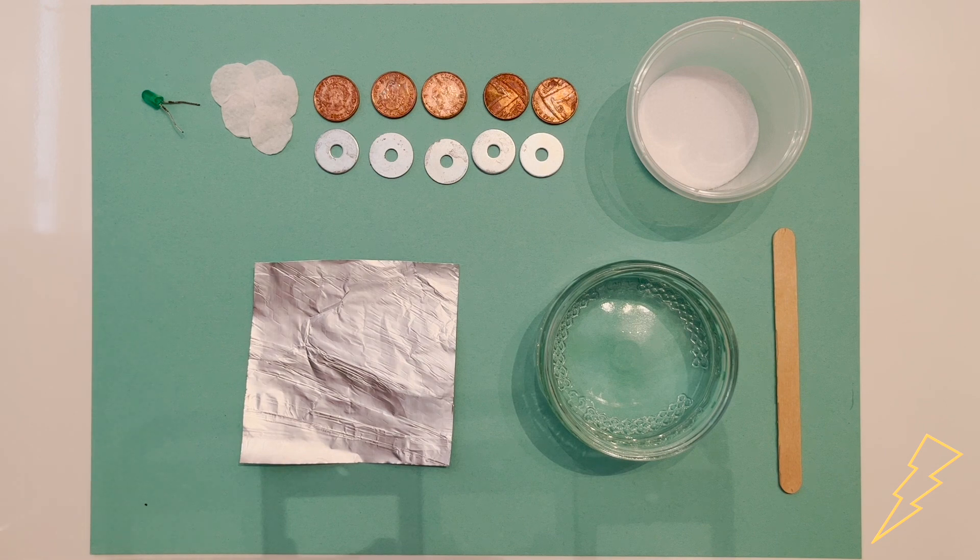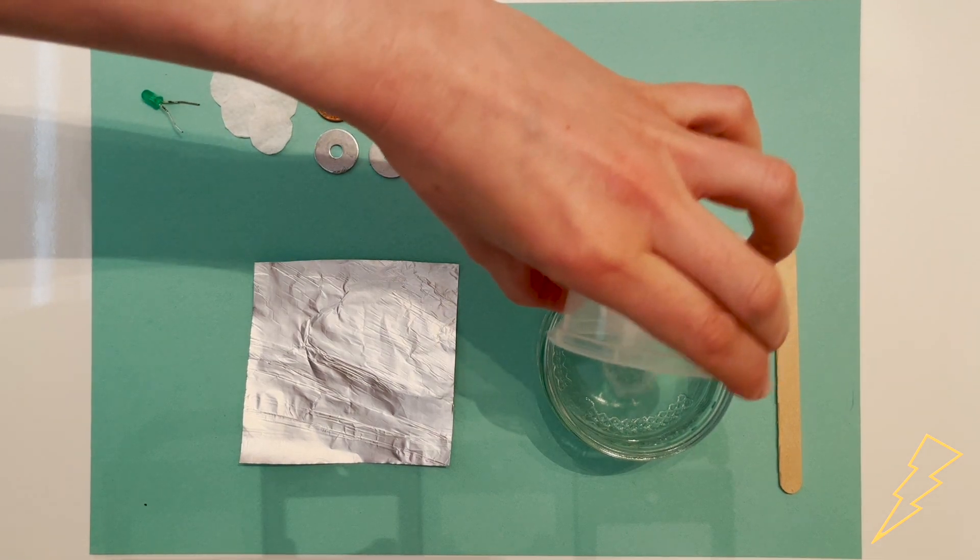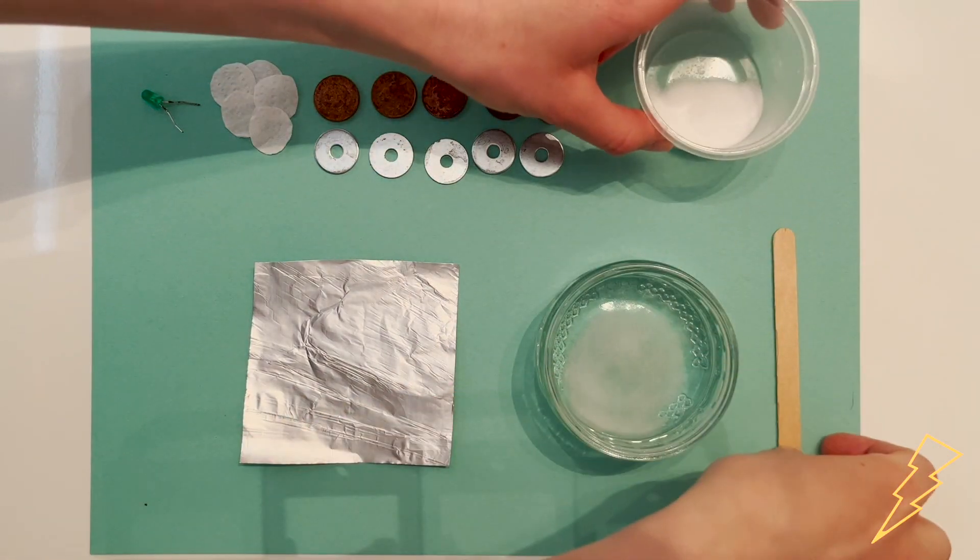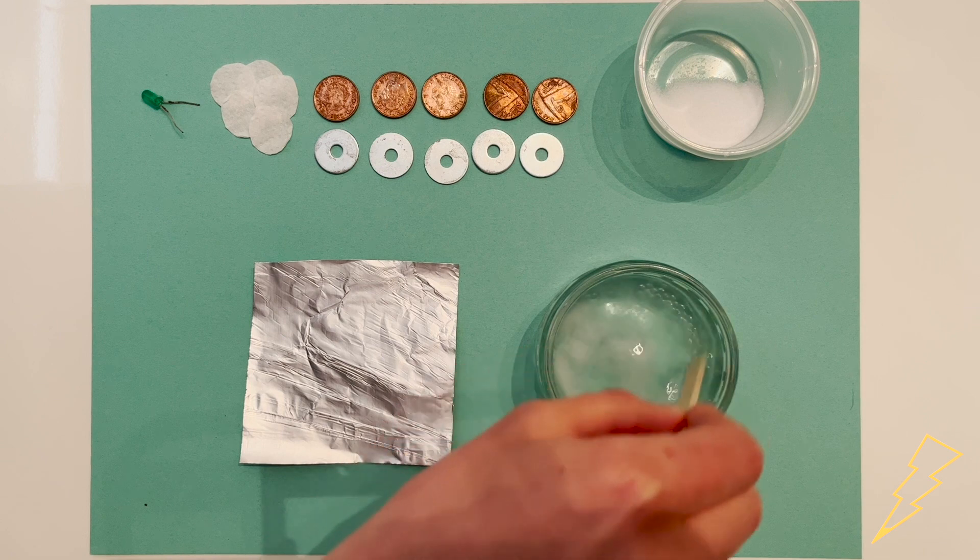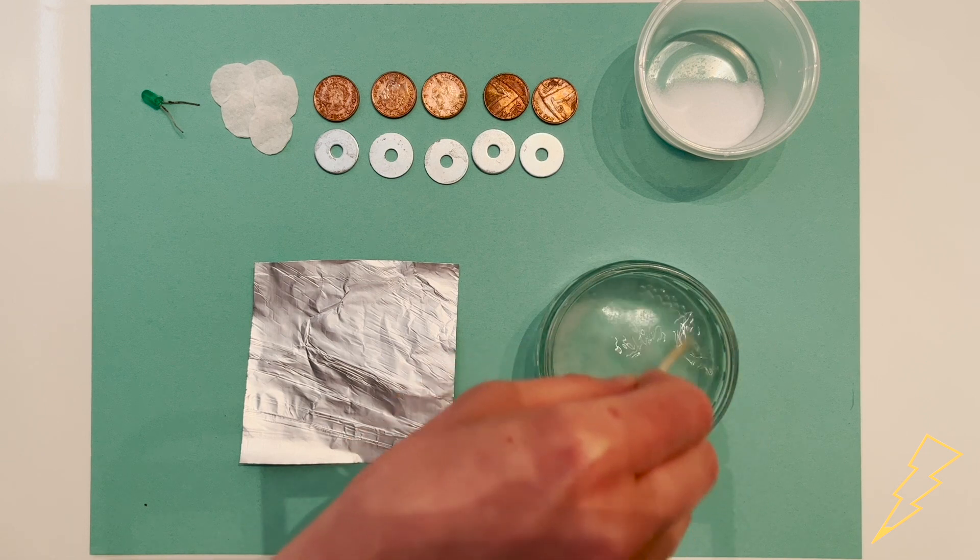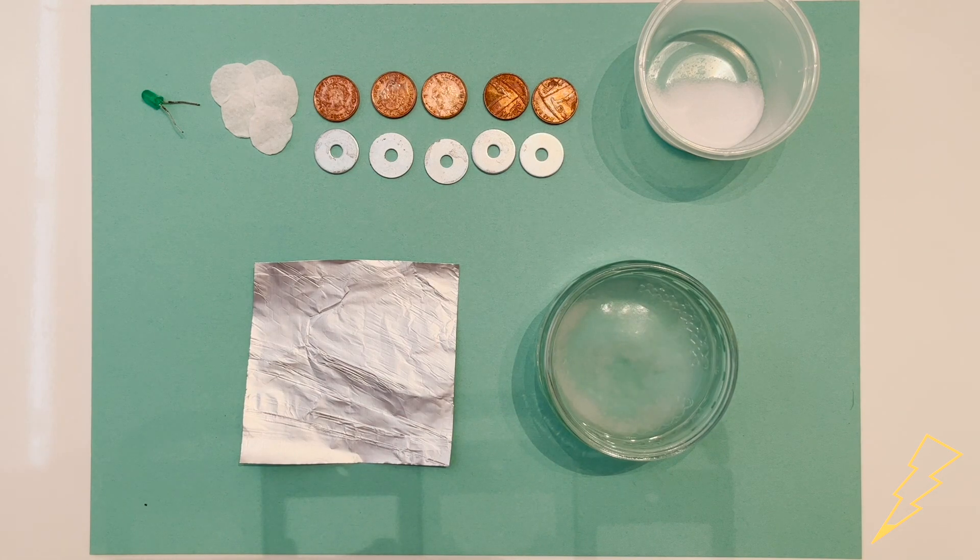Here is the equipment you should have for the penny battery experiment. First, add some salt to your water and stir this together thoroughly. This makes your conductive liquid. You're going to need to add enough salt so that you can still see some in the bottom of the water even after it's been stirred together.